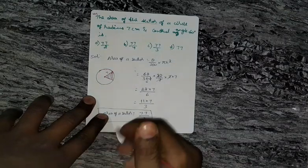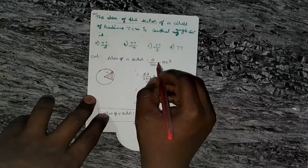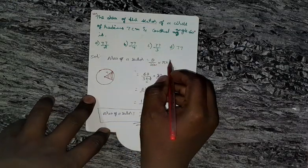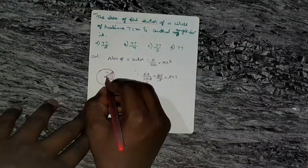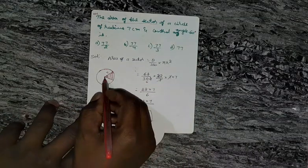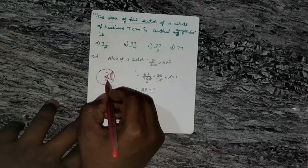So, we have a formula. Area of a sector is equal to angle divided by 360 into pi R square. That is, their central angle, that is this angle, angle between this line and this line is 60 degree.